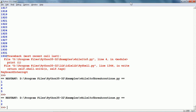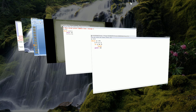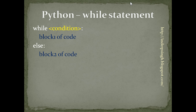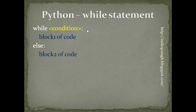Now let us see the second format of the while statement. In this format, we have the usual while condition colon block of code, and we also have an else block: else colon followed by the else block of code. The else block of code is run after the while condition becomes false. First the entire while loop will be executed, and when the condition becomes false, the else block will be executed.